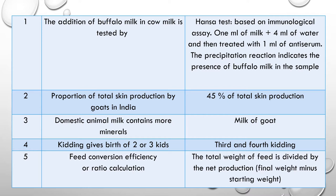Question 3: Which domestic animal milk contains the most minerals? The answer is goat milk. Milk of goat contains the highest amount of minerals in the milk of domestic animals.